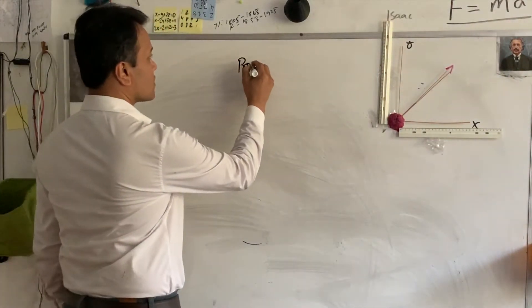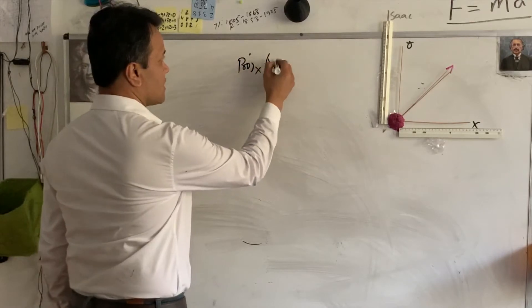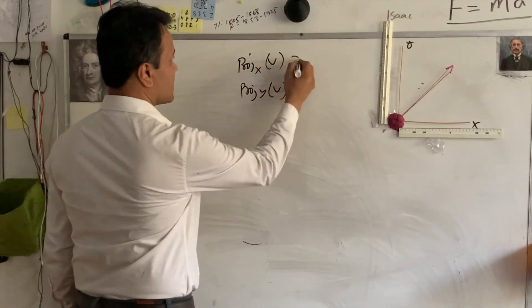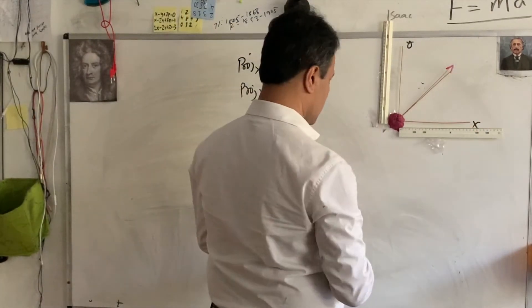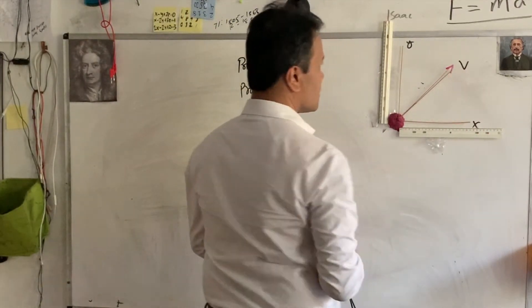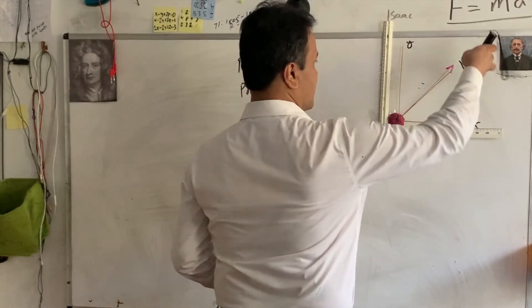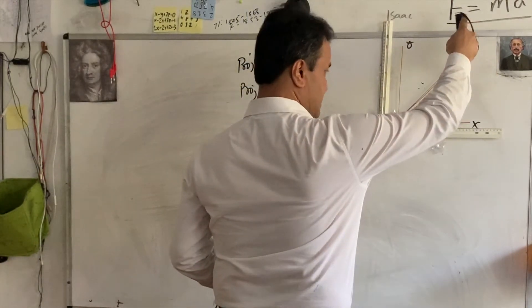So, projection, projection of x on v and projection of y on v is equal to projection of x on v. So, this we're going to call, of course, v. So, projection of x on v is, let's see, what is it?